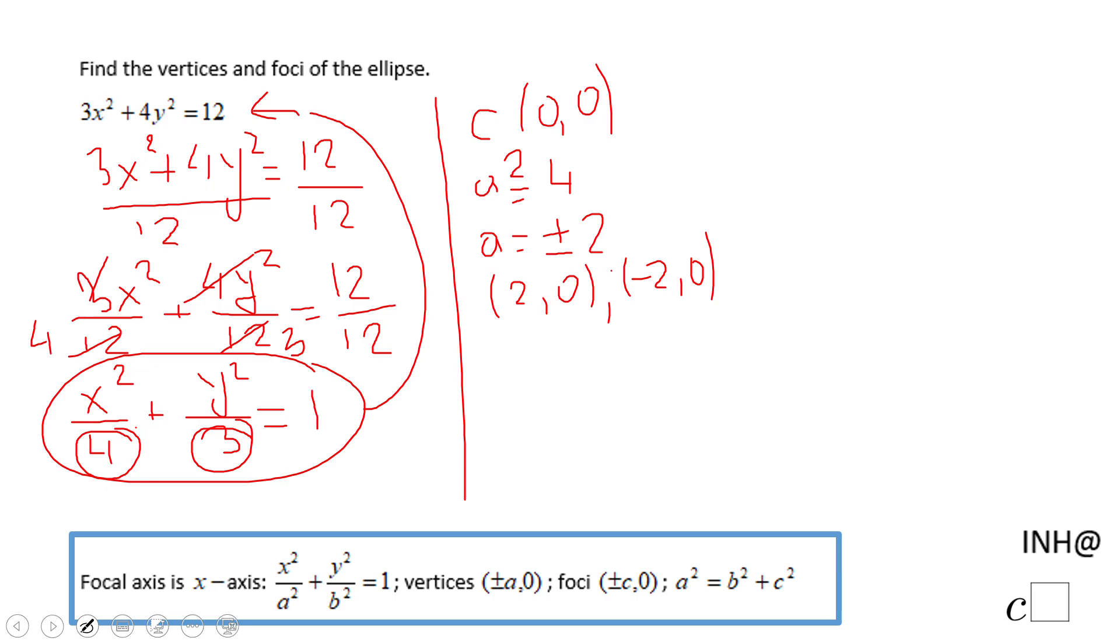So for foci, we're going to do a² - b². So c² will be 4 - 3, which is going to be 1.